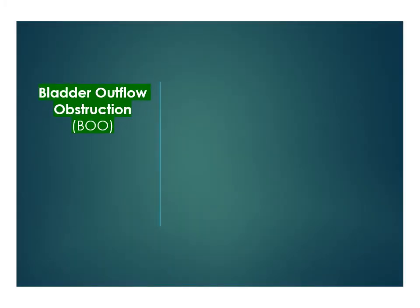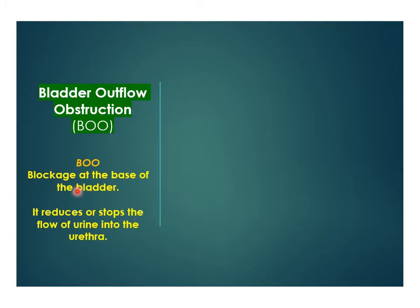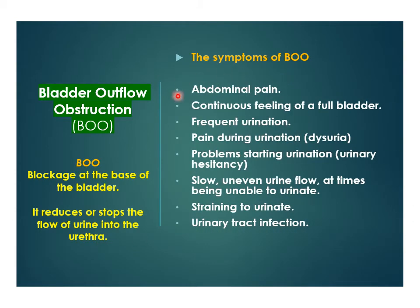Bladder outlet obstruction (BOO) is due to a blockage at the base of the bladder by an enlarging prostate or other cause, which reduces or stops the flow of urine from the bladder into the urethra. Symptoms of BOO include abdominal pain, continuous feeling of a full bladder, frequent urination, dysuria, urinary hesitancy, slow or uneven urine flow, inability to urinate, straining to urinate, and effects of urinary tract infection.